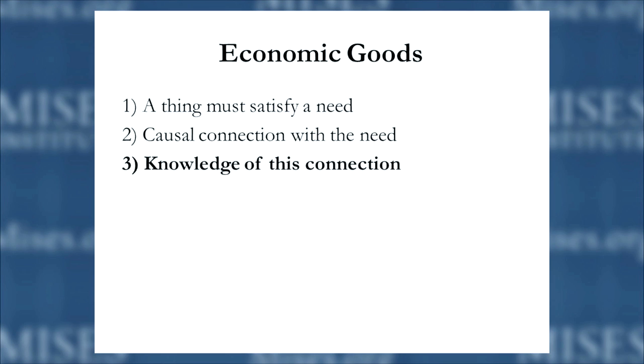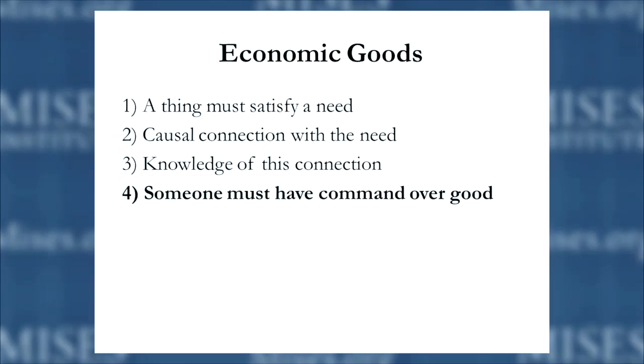Thirdly, you have knowledge of this connection — you know that water will alleviate thirst, or that clothes alleviate nudity. And finally, somebody has to have command over that good, that thing which satisfies the need and has a causal relationship with the desire. This is where we get into property rights, defining who owns what and who has command over different types of resources.